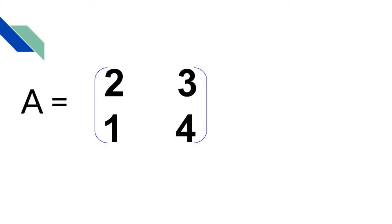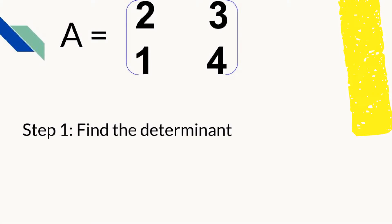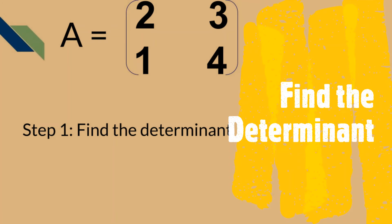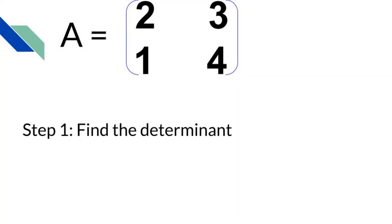Let's find the inverse of this 2 by 2 square matrix. The first step is finding the determinant. The formula we will use later will involve dividing by the determinant.